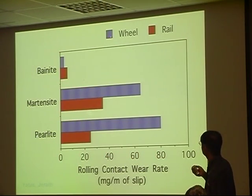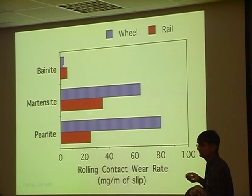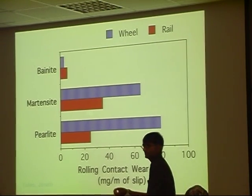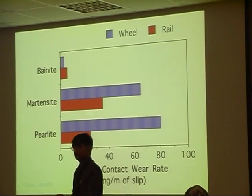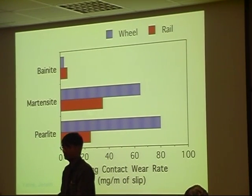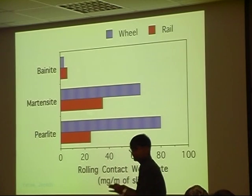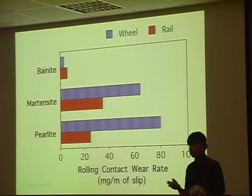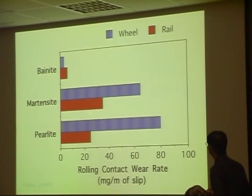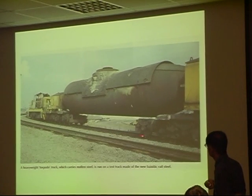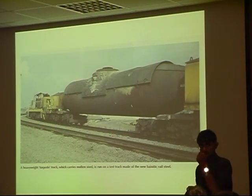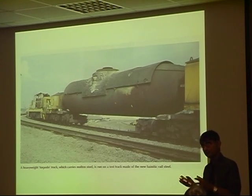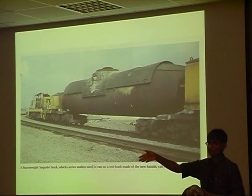And you can see that the new bainitic steel, without any carbides, has much better rolling contact resistance than pearlite and martensite. Similarly, the wear rate on both the wheel and the rail is much smaller because there are no hard particles which break and cause or add to the wear problem. Whereas here, you get a fracture of small particles which then act like an abrasive. And this is the actual bainitic rail steel with a railway line going on top of this. Completely designed using theory alone. And of course, then the rail was manufactured.